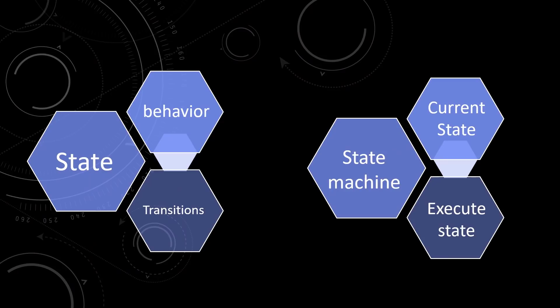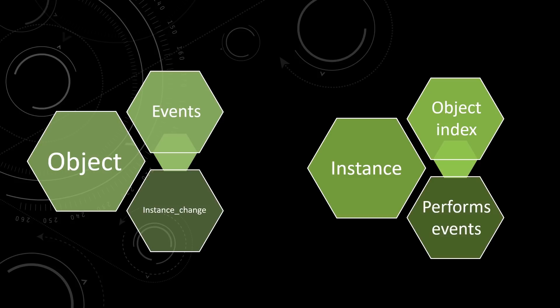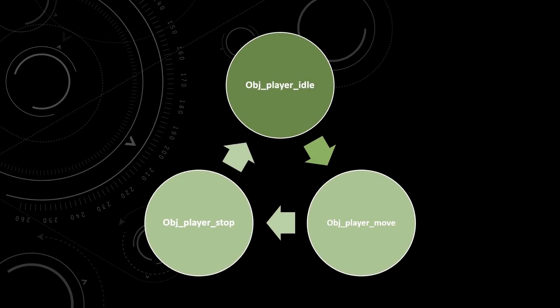Now, if you've been using GameMaker for any amount of time, this would sound rather familiar, because what we have just described are objects and instances. Objects are just a collection of scripts that should run when different events are triggered, and instances perform the events described by their object index. We even have a way of changing the current object index of an instance using instance_change. We can simply use instances as state machines and use instance_change to transition between objects.